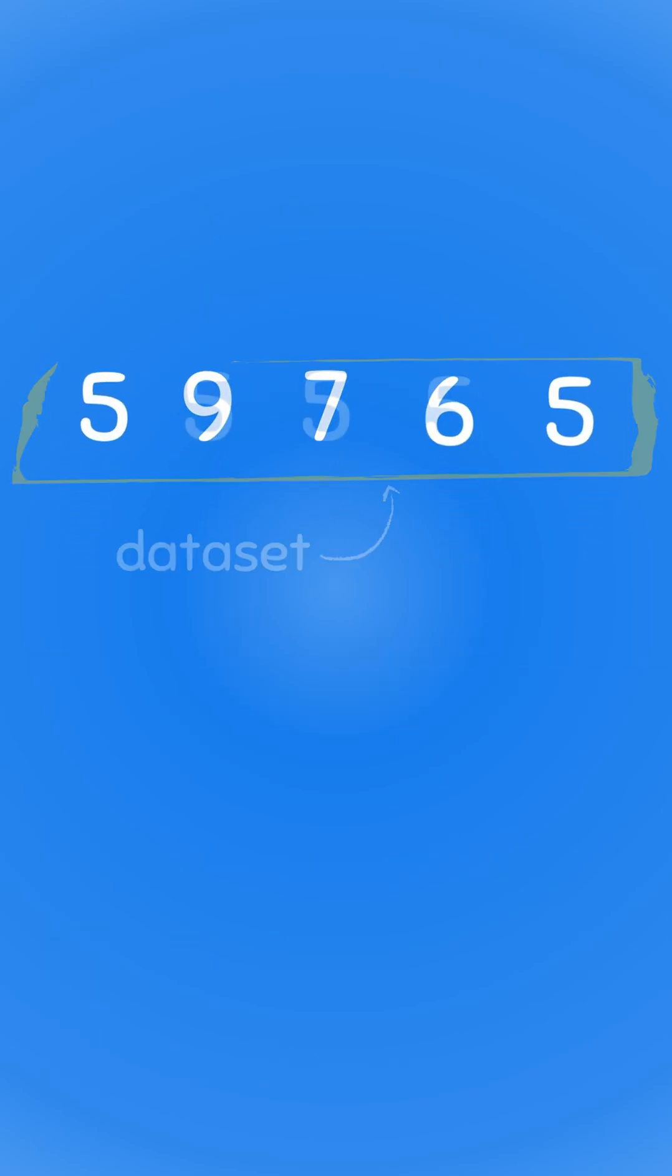When we have numbers in a data set, except if all the numbers are the same, these numbers are usually spread out from each other and from their center.